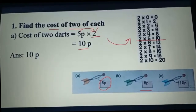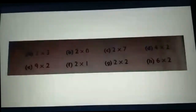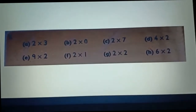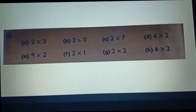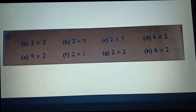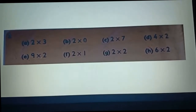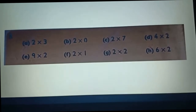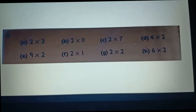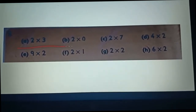You have to solve B and C by yourself. Now number 2: here we have some problems — two multiply by three, two multiply by zero, two multiply by seven, four multiply by two, nine multiply by two, two multiply by one, two multiply by two, six multiply by two. I will solve A, B, C, D for you.